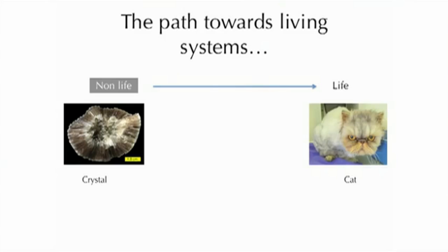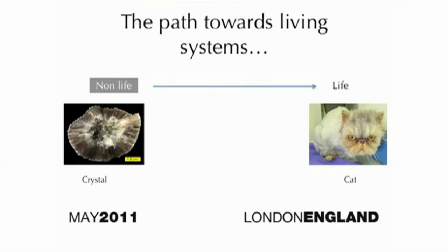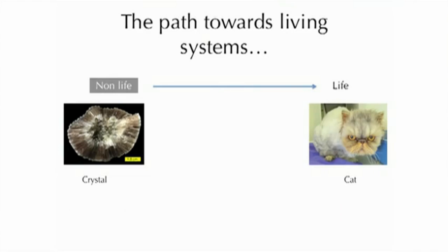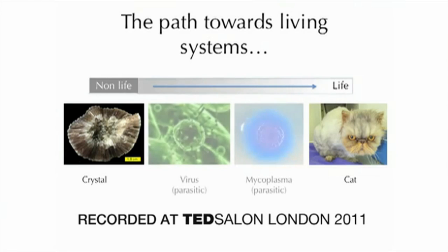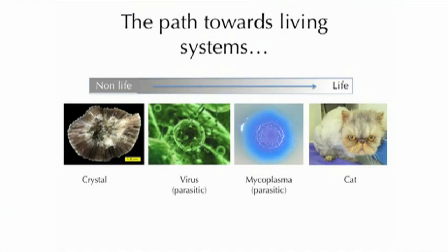So historically, there's been a huge divide between what people consider to be non-living systems on one side and living systems on the other side. So we go from, say, this beautiful and complex crystal as non-life, and this rather beautiful and complex cat on the other side. Over the last 150 years or so, science has blurred this distinction, and now we consider that there may be a kind of continuum that exists between the two.